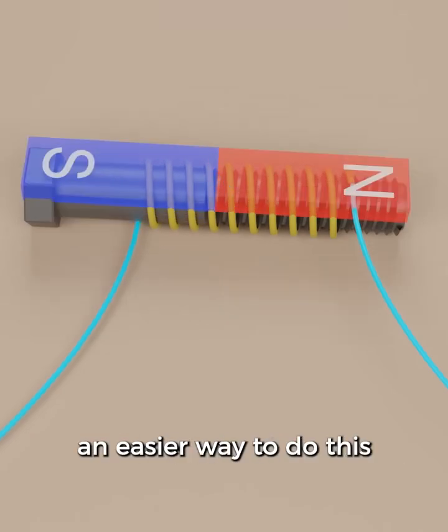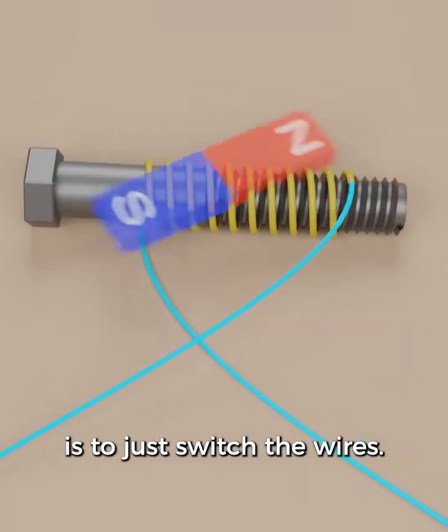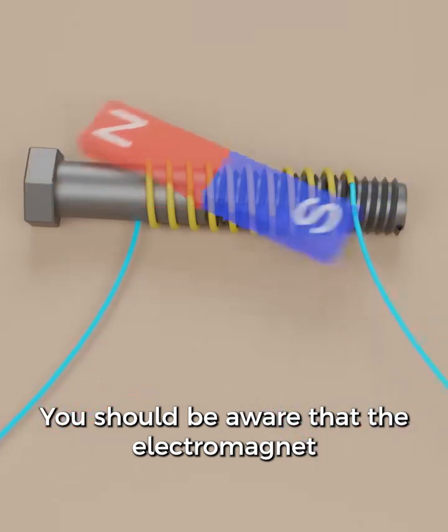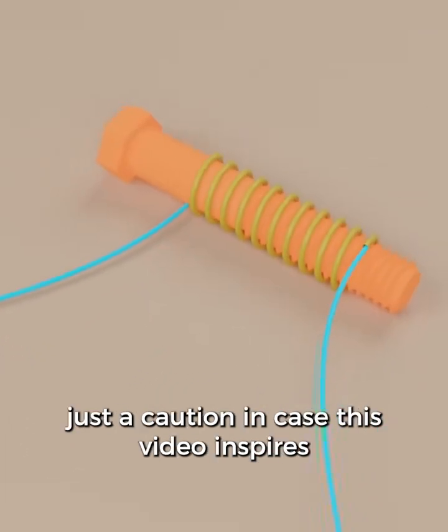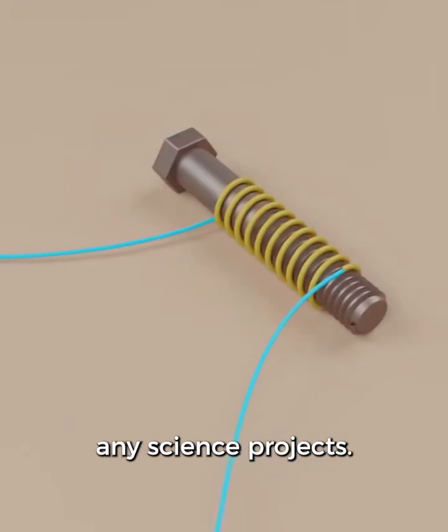Instead of flipping the battery, an easier way to do this is to just switch the wires. You should be aware that the electromagnet will get very hot if it's on for a while. Just a caution in case this video inspires any science projects.